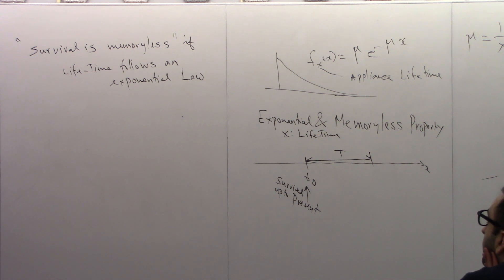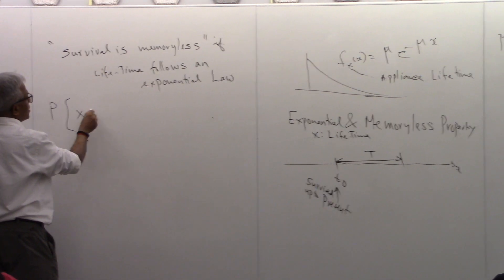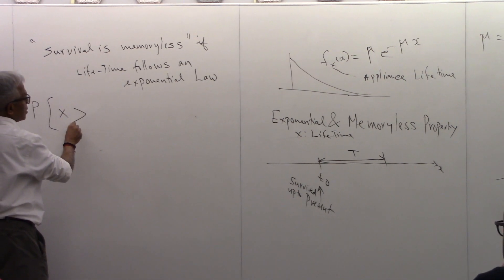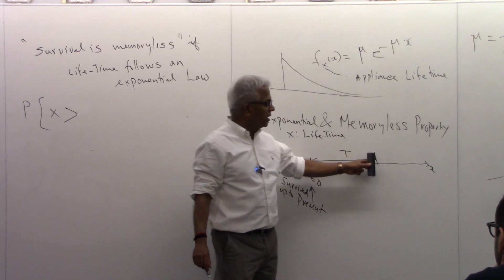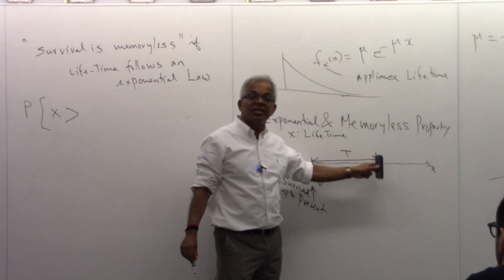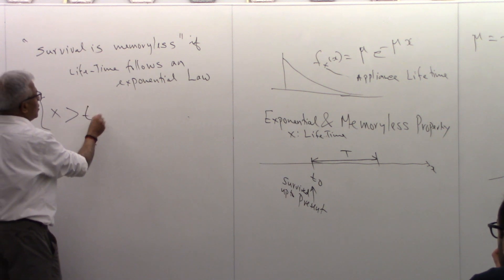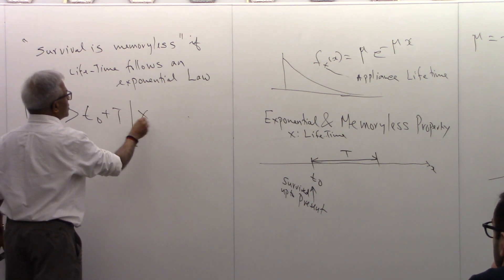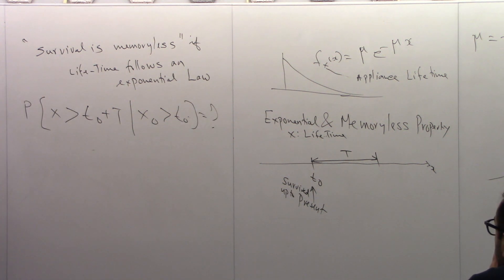Let me explain to you what the memoryless property is. What this says is, what is the probability that I will survive? Look at here. Given that I have survived up to here, what is the probability that the equipment will survive another t years? That's what the question is. What is the probability that the equipment will live for this, given that it has survived up to here?